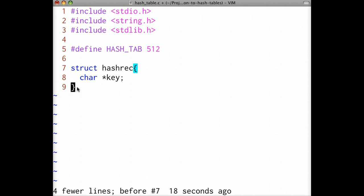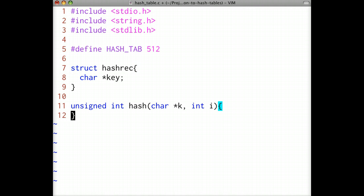Next we'll implement our hash functions. Recall that our hashing strategy is going to be double hashing. Our hash function has two parameters: k is a pointer to the character string which will be the key, and i is the current hash attempt. We'll return the value h1(k) plus i times h2(k). We want to make sure that the resulting hash value doesn't go past the end of the array, so the operation is done modulo HASH_TAB.